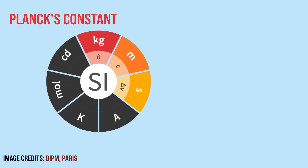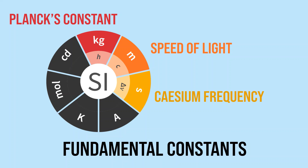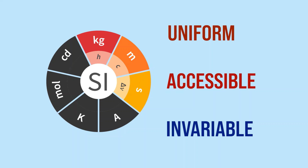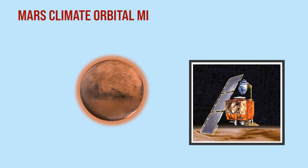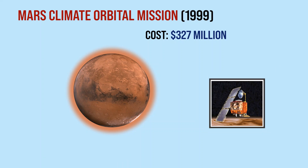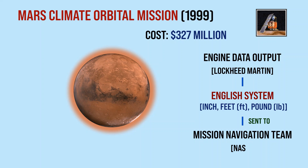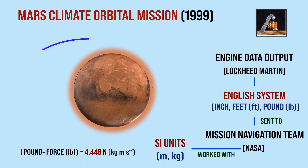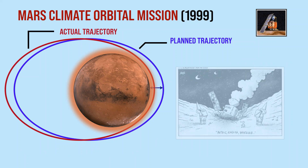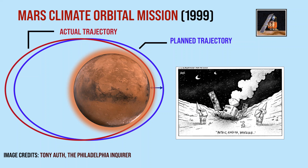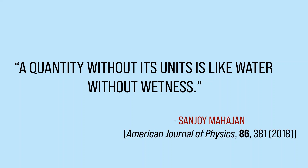All three base quantities are now defined in terms of fundamental constants of nature. The significance of a uniform system of units is illustrated by the 1999 Mars Climate Orbiter mission. NASA's contractor provided engine specifications in English units, using inch and pound for length and force, while NASA expected specifications in SI units. Due to this mismatch, the probe descended too low into Mars' atmosphere and burned up — a simple mismatch in units cost NASA millions of dollars. The topic of measurement and units may look dull, but it forms the basis of everything in our civilization.